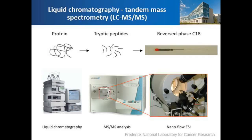Liquid chromatography tandem mass spectrometry, also known as shotgun proteomics, is an analytical tool where proteins are digested into tryptic peptides with trypsin and analyzed using reverse-phase chromatography followed by processing and identification of proteins.